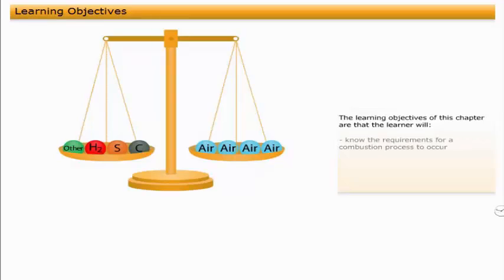The learning objectives of this chapter are that the learner will know the requirements for a combustion process to occur, have a basic understanding of the combustion process, and have a basic understanding of the chemistry of combustion.